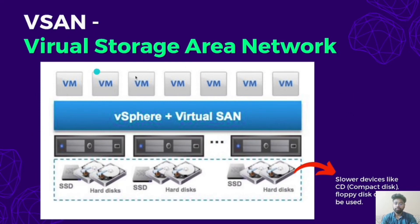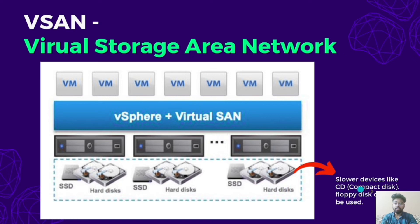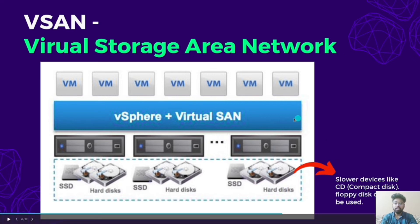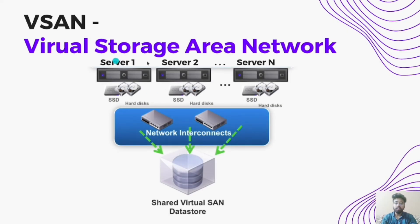Now let's shift to the Virtual Storage Area Network. Here we have a famous diagram of VMware vSphere hypervisor. The idea is that we are using a Storage Area Network — an area equipped with many secondary storage devices, including SSDs, hard disks, and even slower devices like compact disks and floppy disks. Multiple servers handle user queries; when a request is made to store data, it is passed to the storage area network where the data is actually stored. This is essentially a centralized storage mechanism.